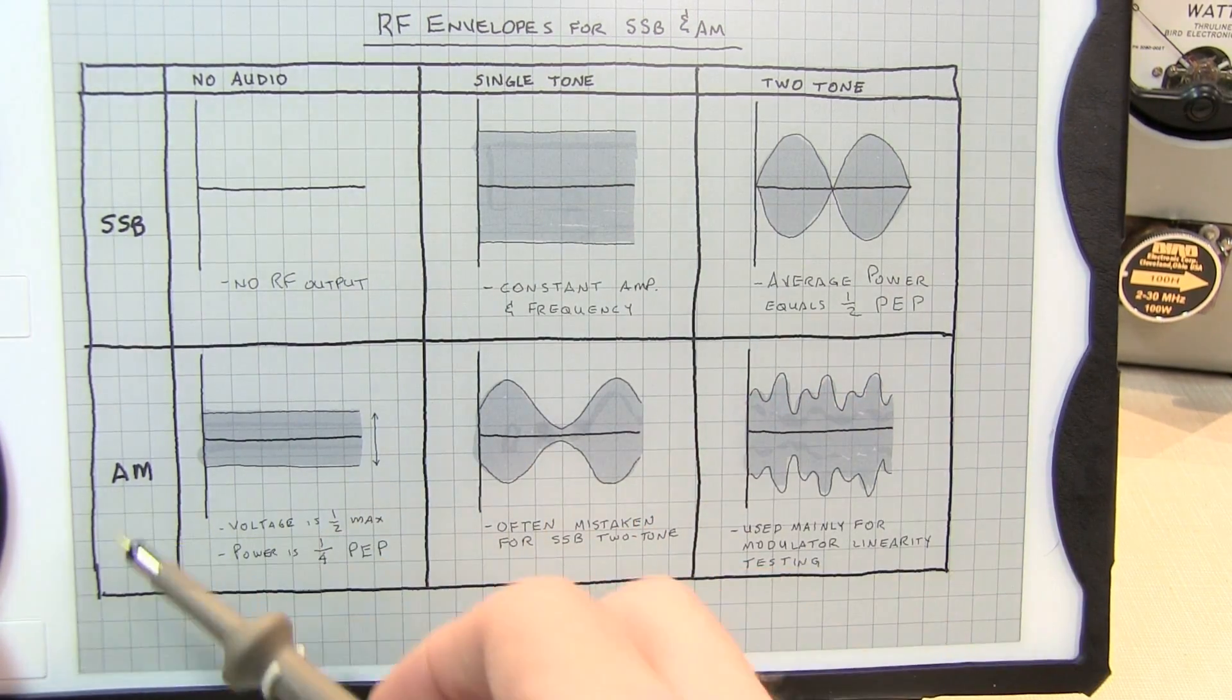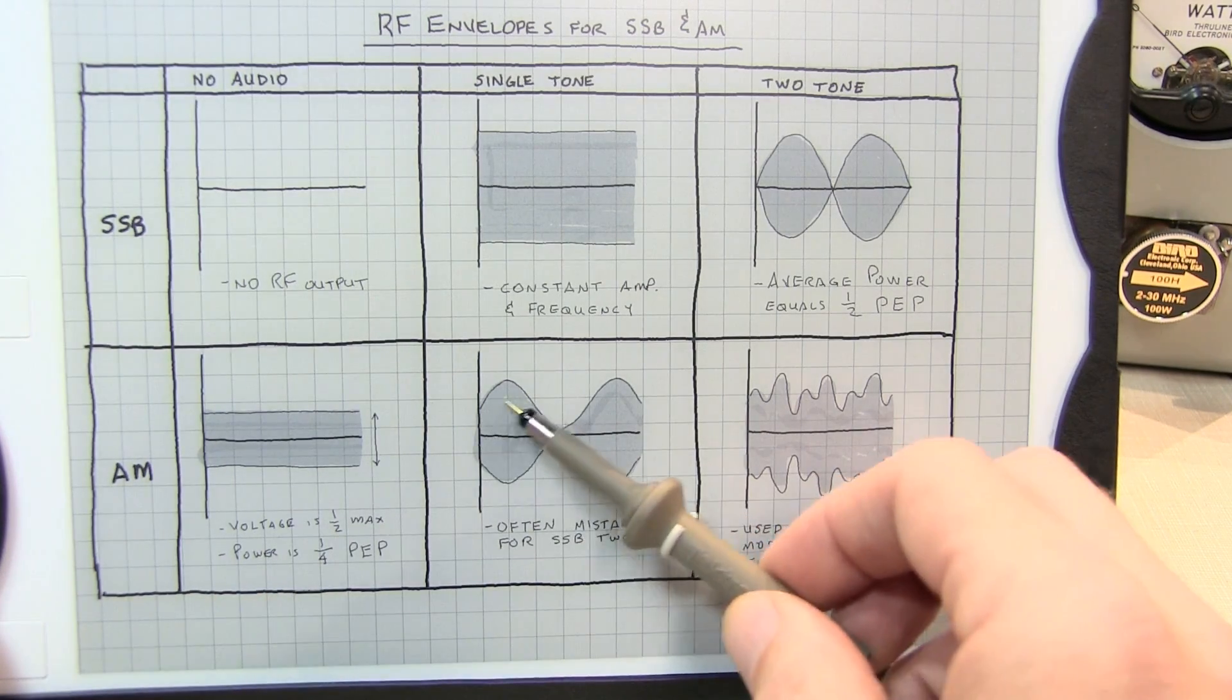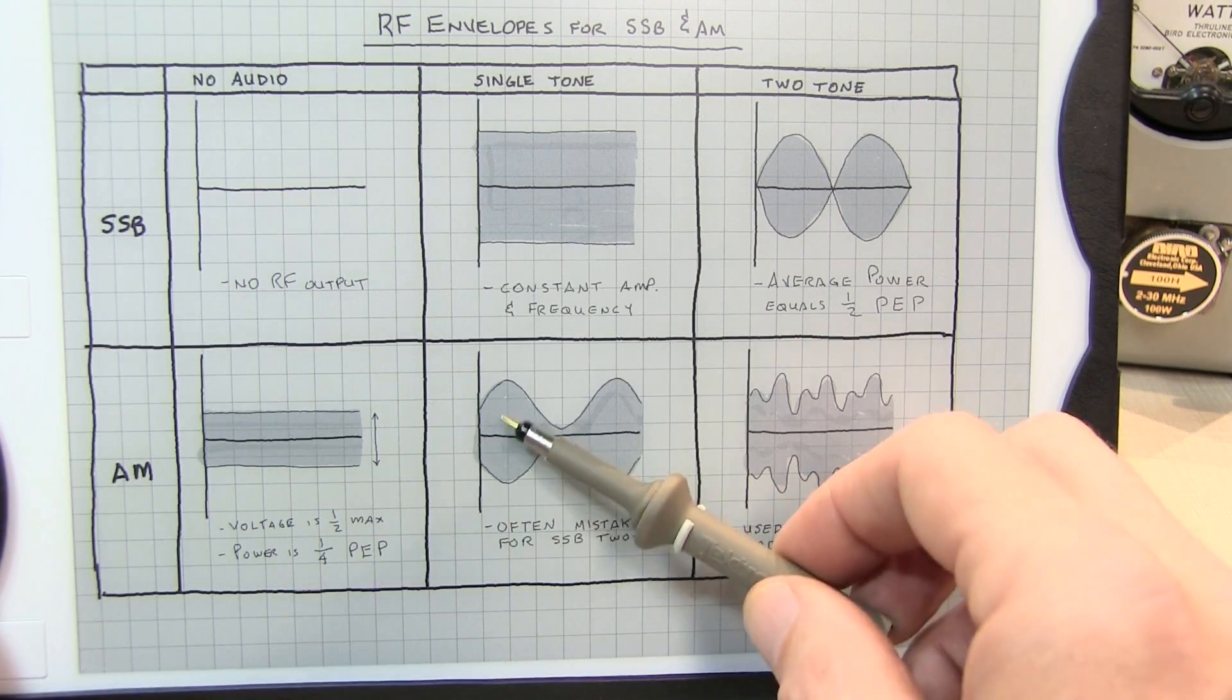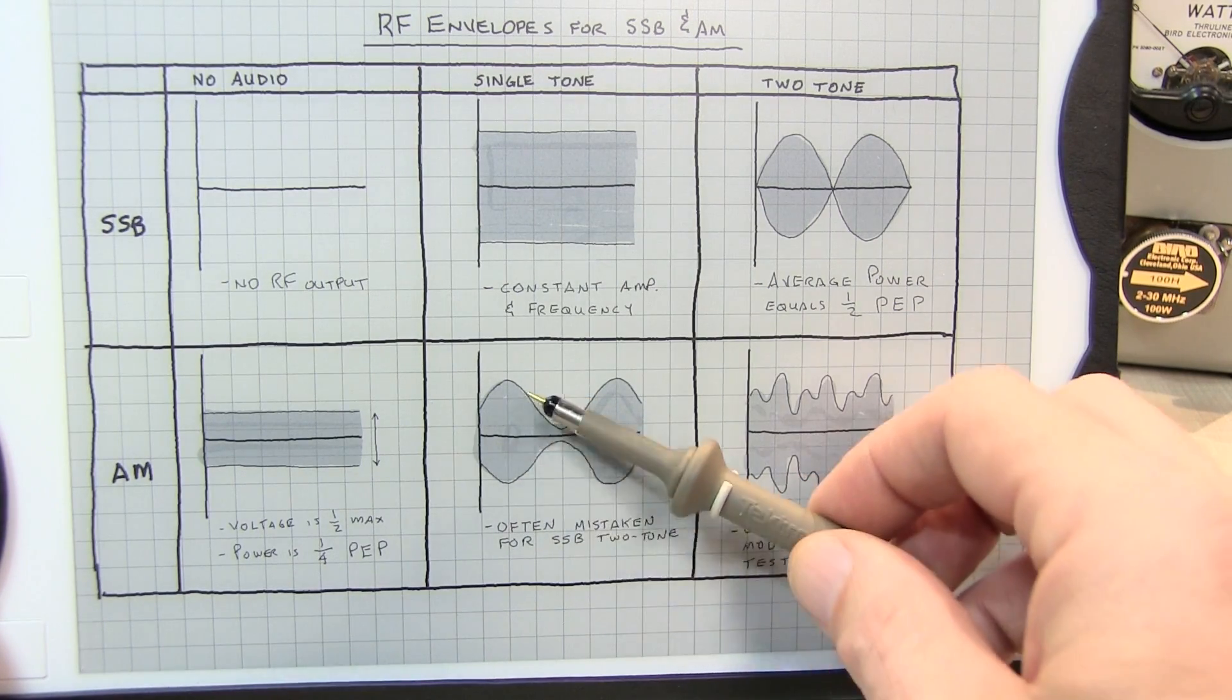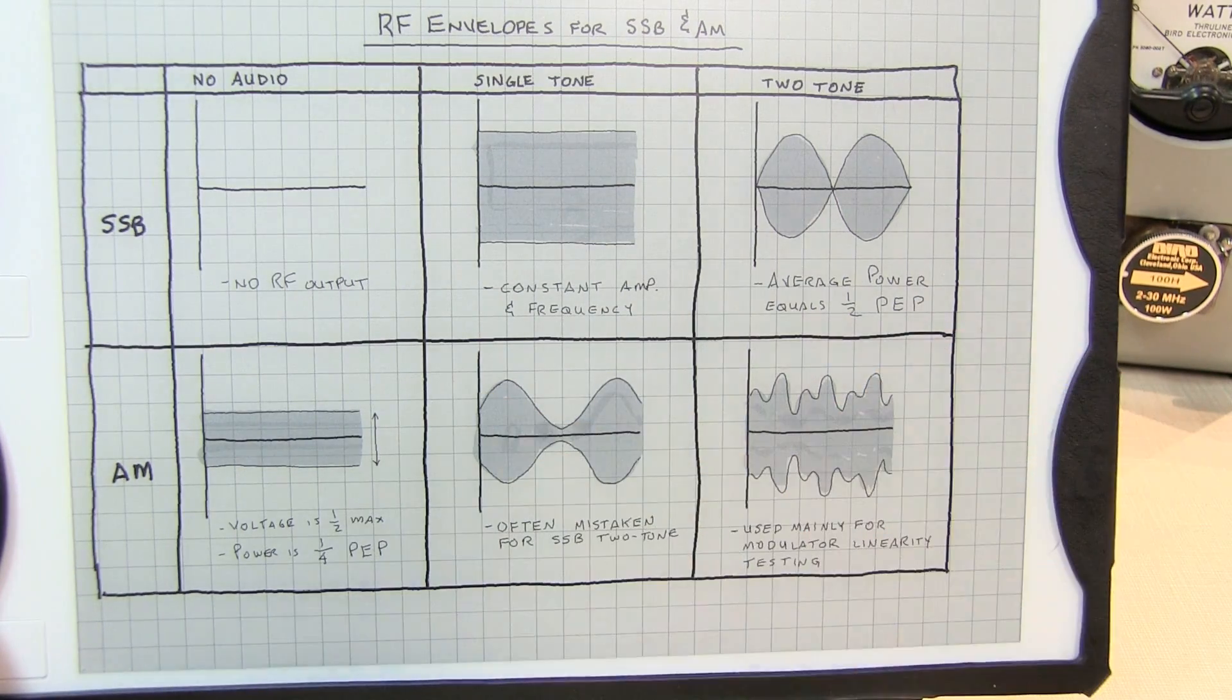If a single tone is applied to an amplitude modulated transmitter, you're essentially going to get an RF envelope that looks like this. The upper and lower envelopes are essentially inverses of each other that follow the amplitude of the baseband or audio signal.